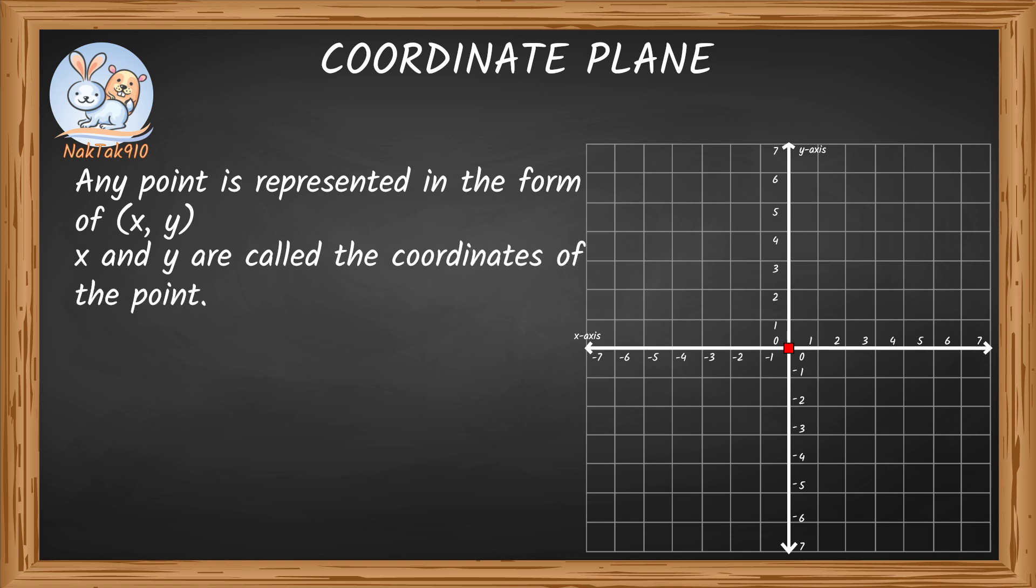The x-value tells us how the point moves either right or left along the x-axis. The y-value tells us how the point moves either up or down along the y-axis.